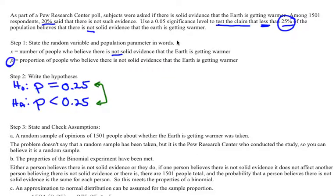The last thing to do in this step is to state your level of significance, called your alpha level. Up here it tells us it's 0.05, so it's a good idea to write that down.